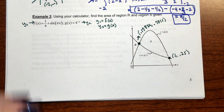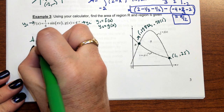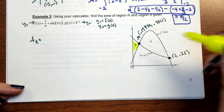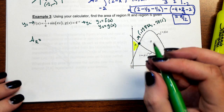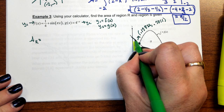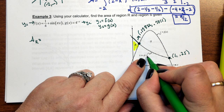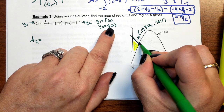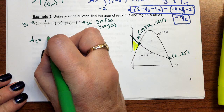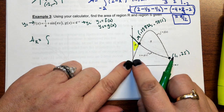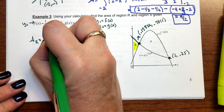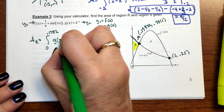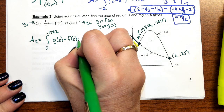Now that I have my bounds, I'm going to find the area of region R first. Region R is what's highlighted in yellow. I have to identify what function is on top — that is labeled as G of X. So G of X is the function on top for region R, and I have it loaded under Y2. The area is going to be the integral from 0 to 0.1782 of G of X minus F of X dx.